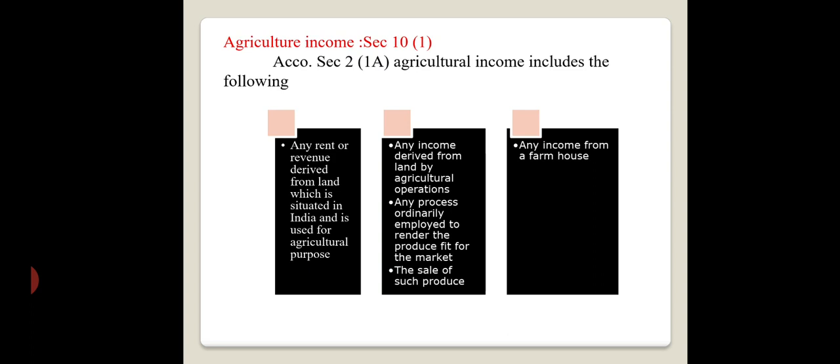Agricultural income includes: any rent or revenue derived from land which is situated in India and is used for agricultural purpose. The condition is that the land must be situated in India only and used for agriculture. Whatever land you have taken on a lease basis, it should be used for agricultural purpose only.